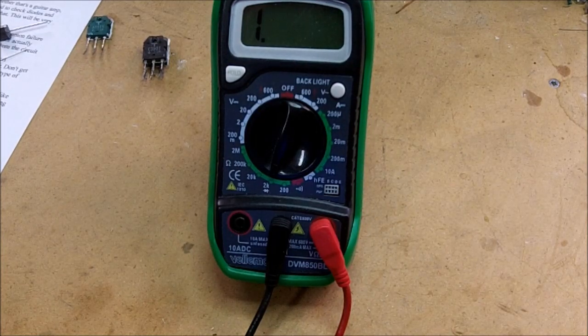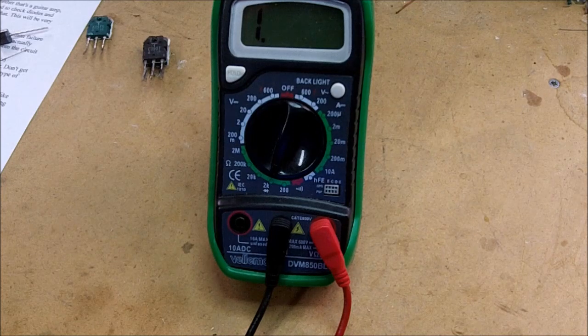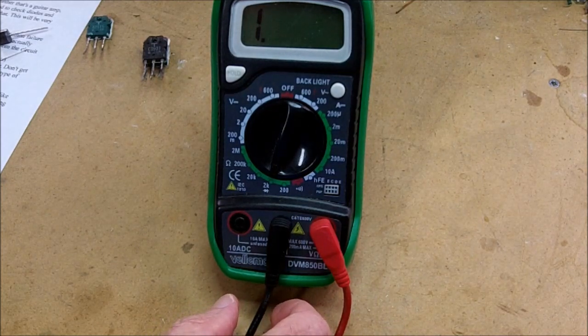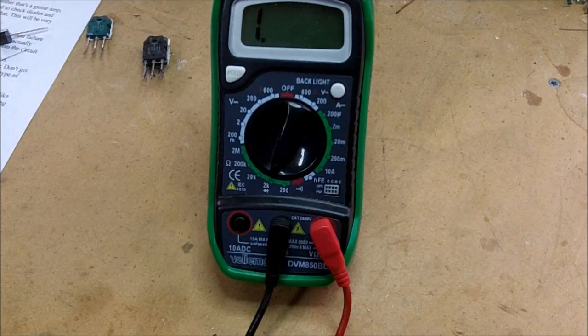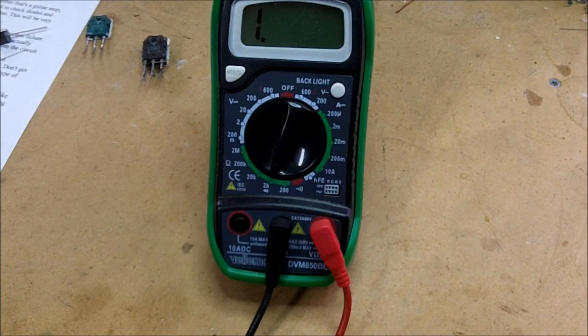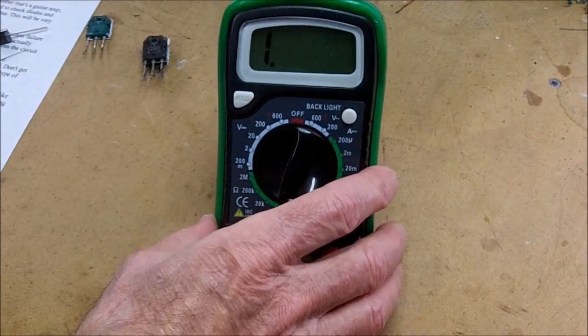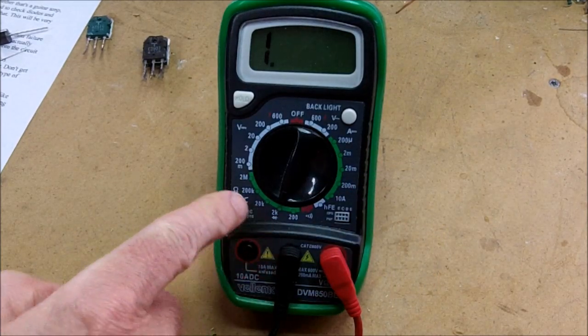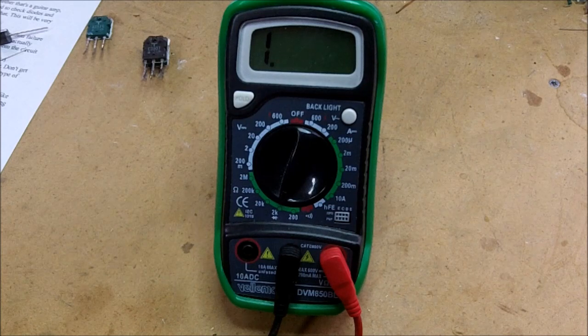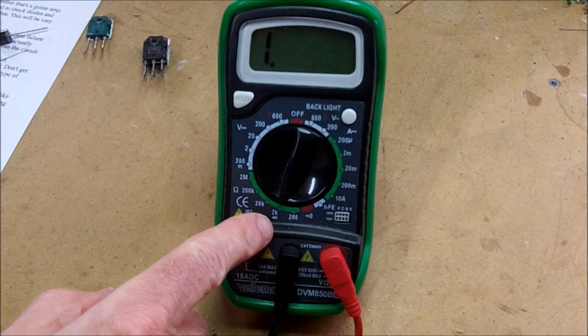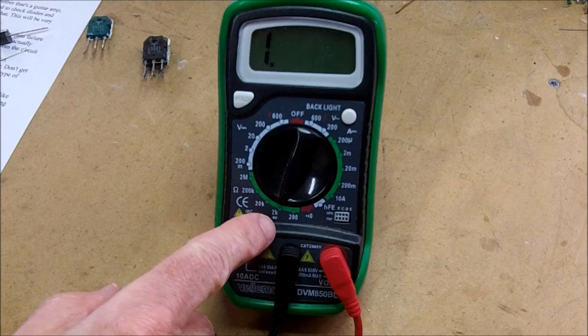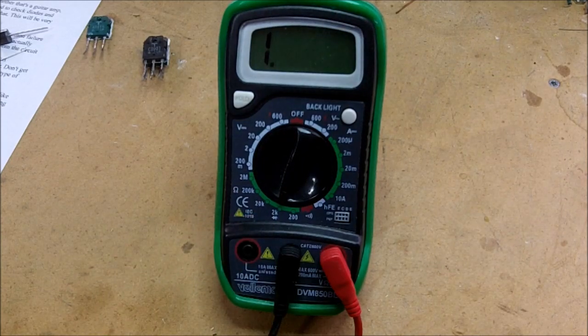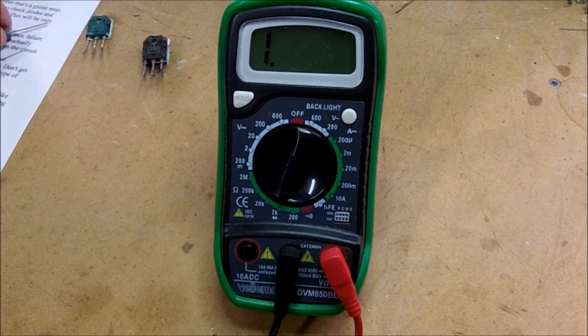Okay, so first of all, how do we test diodes? We're going to use a multimeter, and I'm using a Velman DVM850BL. It's just a relatively inexpensive multimeter that will do a lot of things. One of the things it'll do is measure resistance. There's a setting on here for 2k resistance, and it also has a little diode symbol below it. So that's what we're going to use for testing diodes.